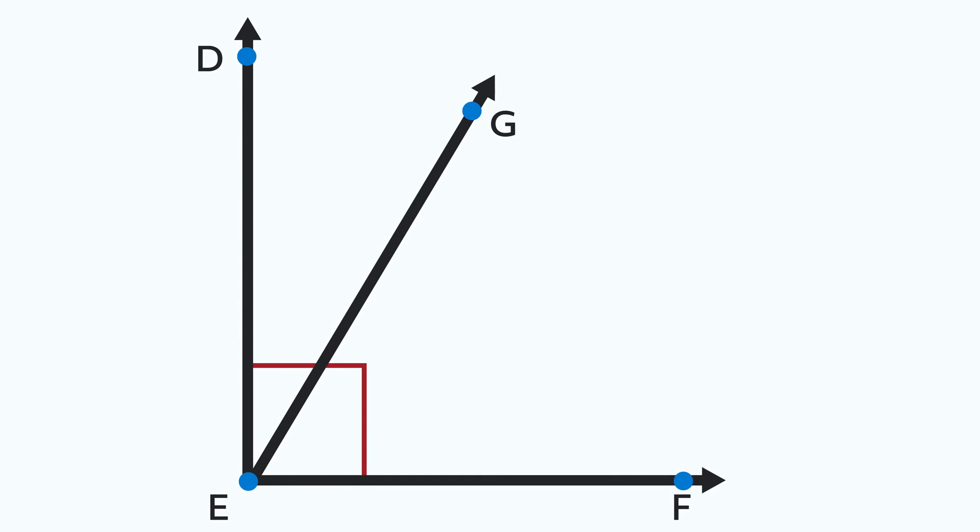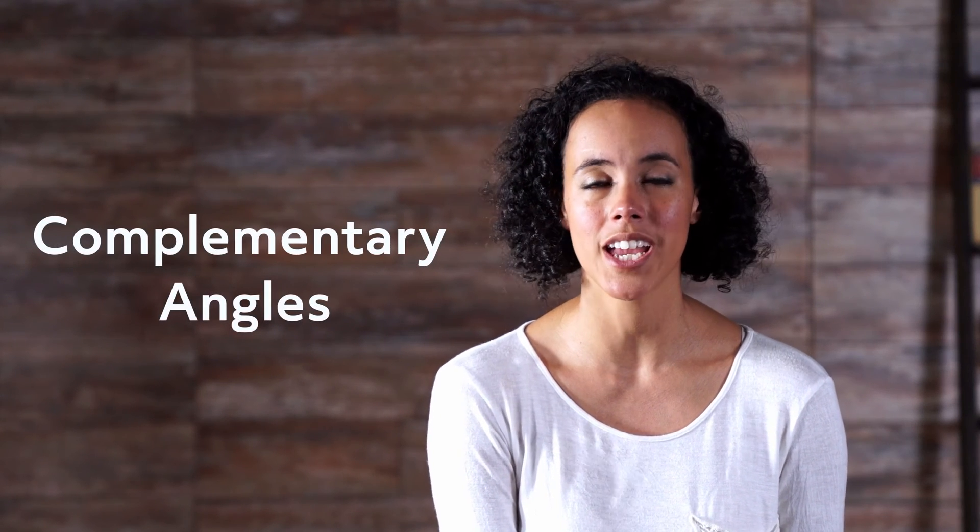For instance, if angle DEG is 30 degrees, then we know that angle GEF is 60 degrees, because 90 degrees minus 30 degrees equals 60 degrees. Angles that add up to 90 degrees are called complementary angles.